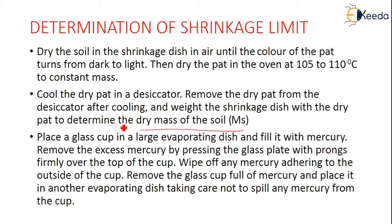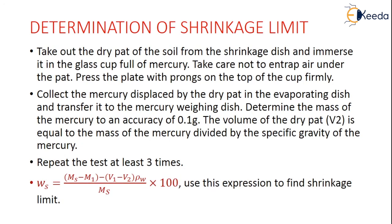Place a glass cup in a large evaporating dish, fill it with mercury, and remove excess mercury by pressing a glass plate with prongs firmly over the top. Wipe off any mercury adhering to the outside of the cup. Remove the glass cup full of mercury and place it in another evaporating dish, ensuring no excess mercury spills. Then take out the dry pad from the shrinkage dish and immerse it in the glass cup full of mercury, taking care not to trap air under the pad.